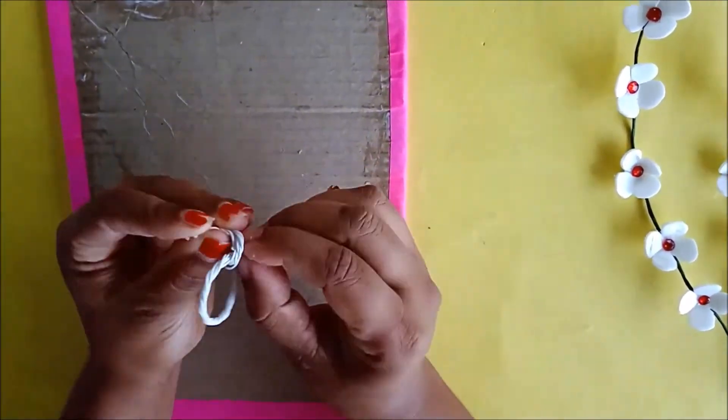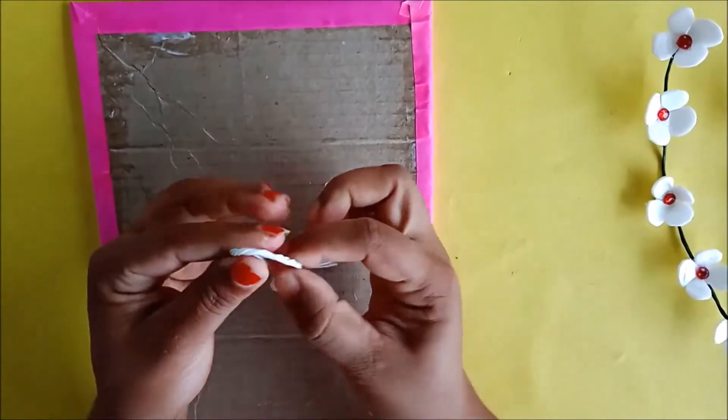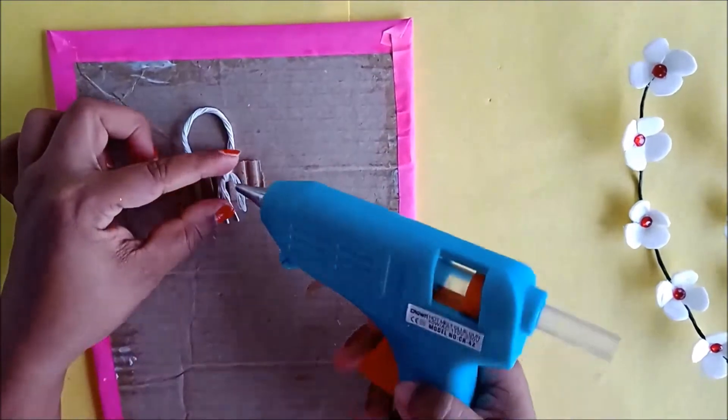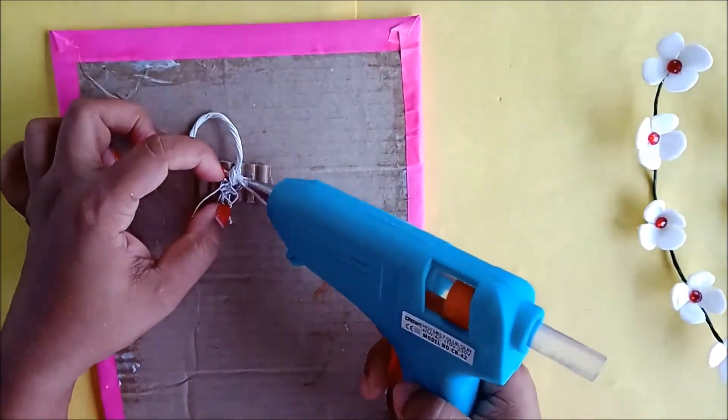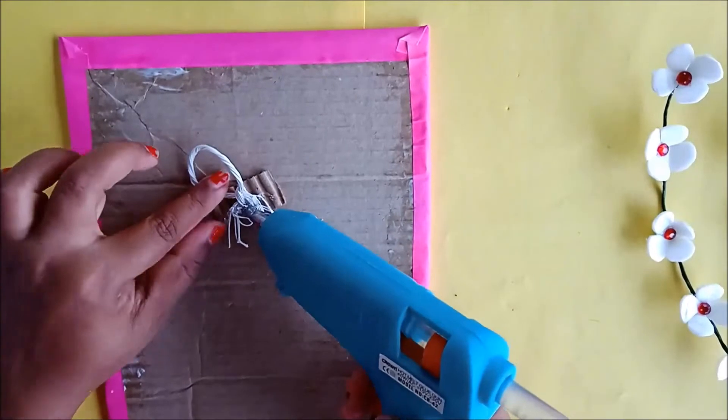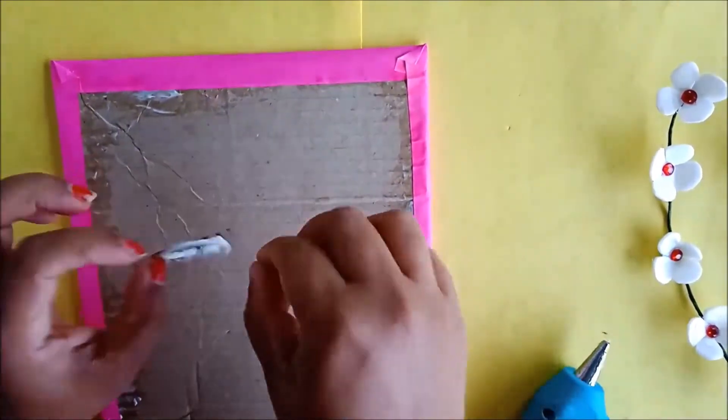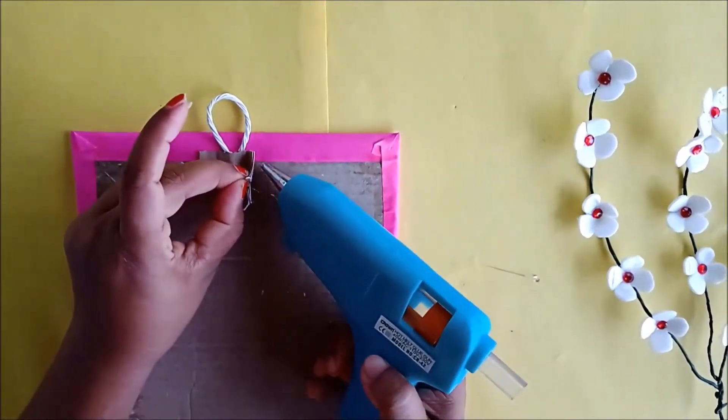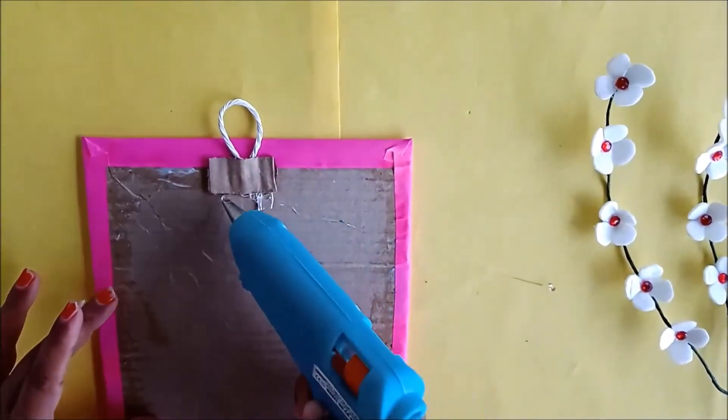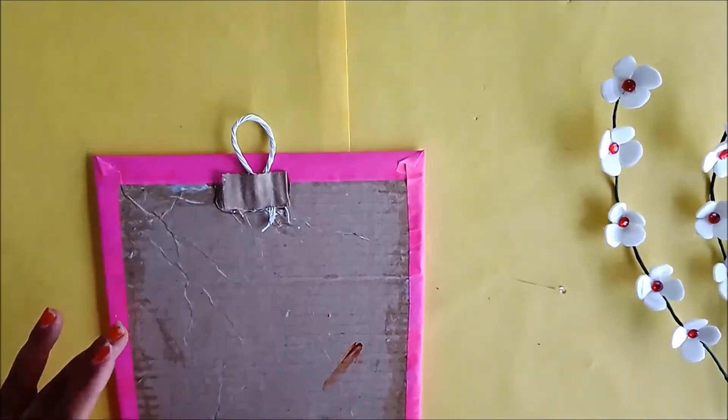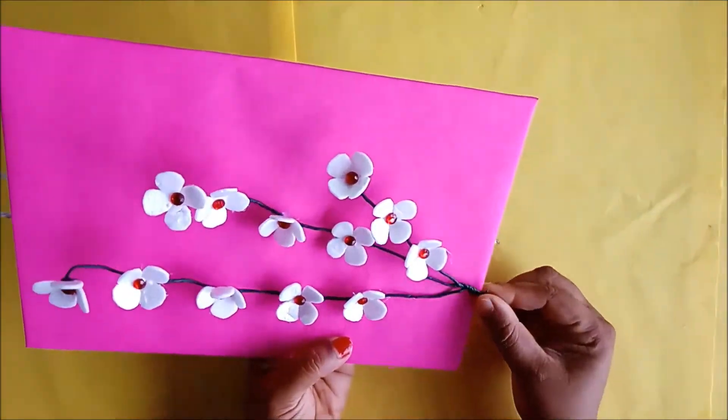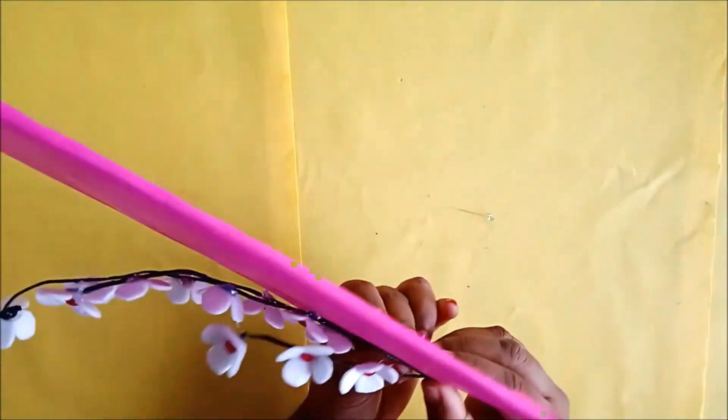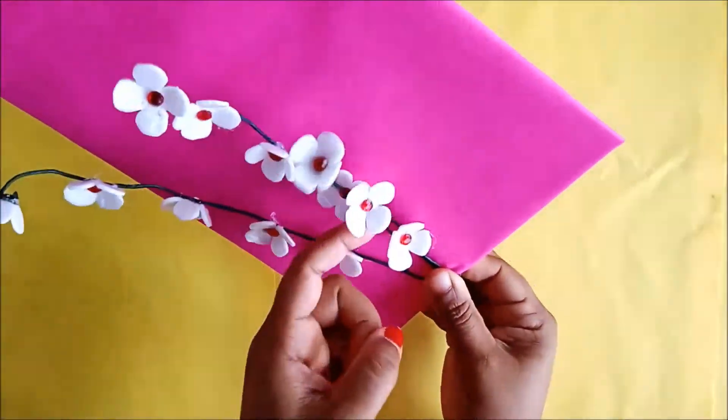Now take the flowers and keep the flowers on the frame. Bend the edge to the back side and stick it firmly at the back side.